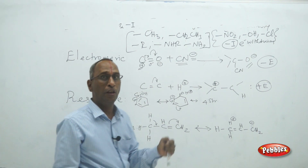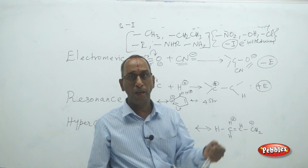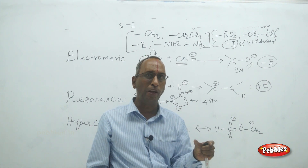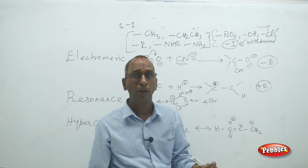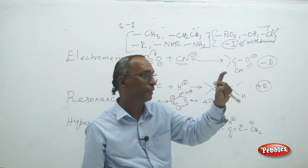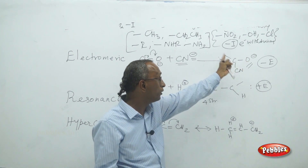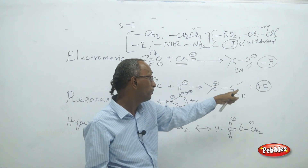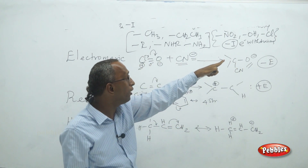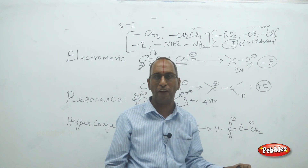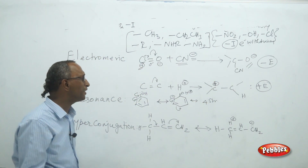The electromeric effect arises due to the shifting of pi electrons towards the more electronegative atom. If the atoms are equally powerful, it will be reflected in resonance, followed by the attack of a nucleophile or electrophile to give a new species. If the resultant species is negatively charged, it is minus-E effect; if positively charged, it is plus-E effect.